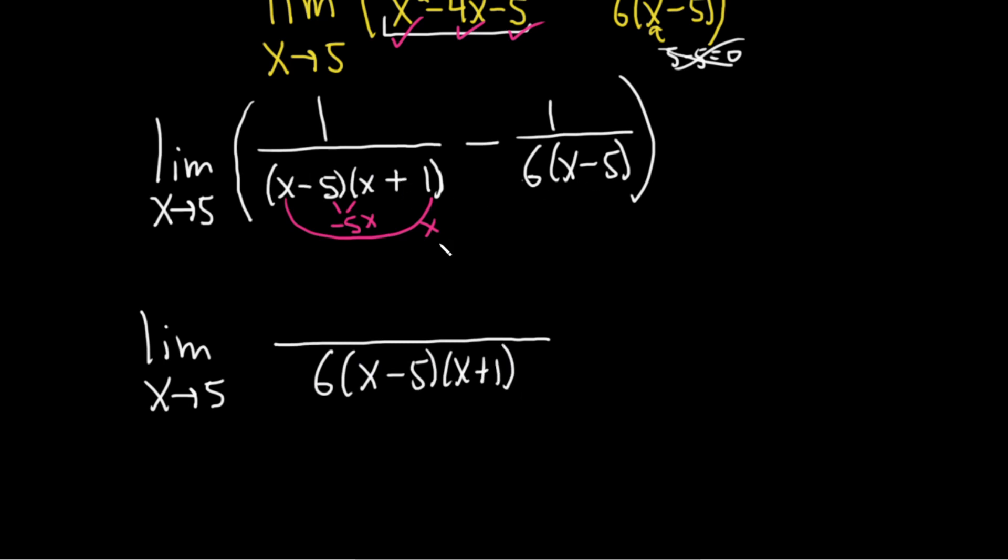And then what you do is you take this number, and it's 1 times what's missing here to get the LCD. Well, you're missing the 6. Minus then 1 times what's missing here to get the LCD. Well, you're missing the x plus 1. Again, it's whatever's here times what's missing. You're missing a 6. Minus whatever's here times what's missing. You're missing an x plus 1. And that always works.